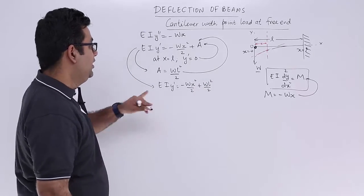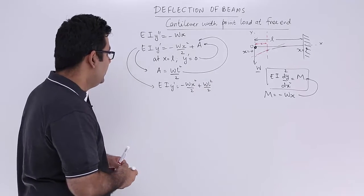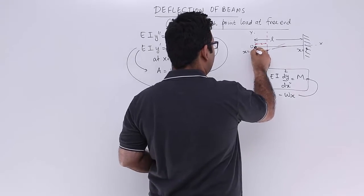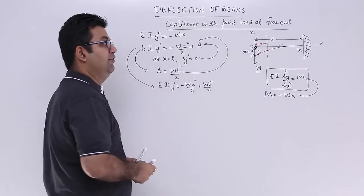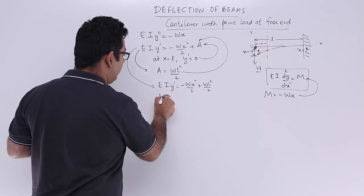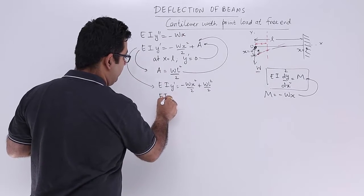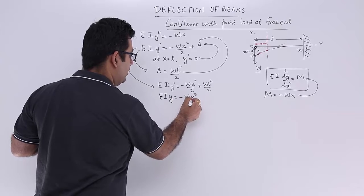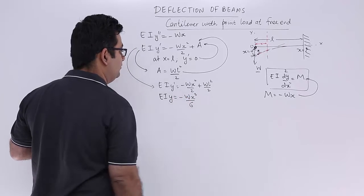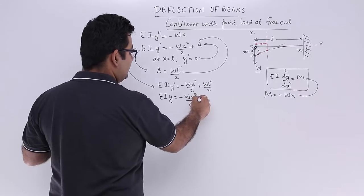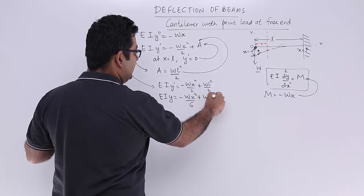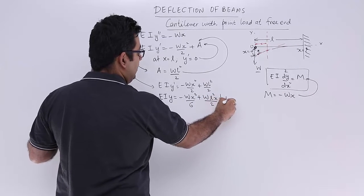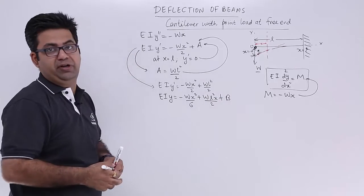Substituting A back in, we get EI times y-dash equals minus Wx² upon 2 plus WL² by 2. Now we integrate once more because we need to find the value of y, that is the deflection. Integrating gives minus Wx³ upon 6 plus WL² x upon 2 plus B, where B is another constant of integration.